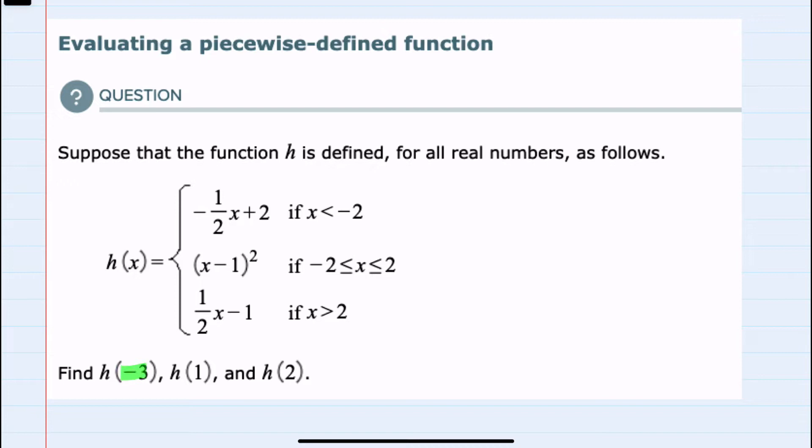Starting with negative 3, the question is which piece does h of negative 3 fall under? And since negative 3 is less than negative 2, we would want to use the top piece of h of x.